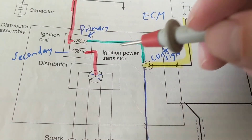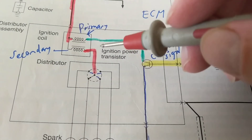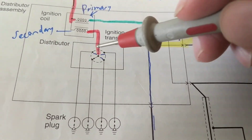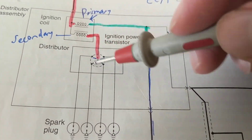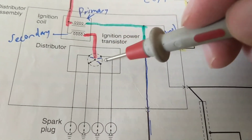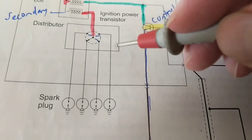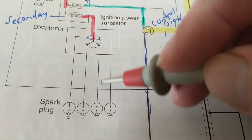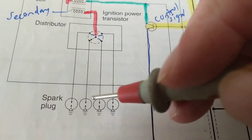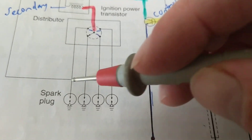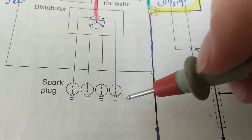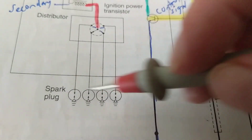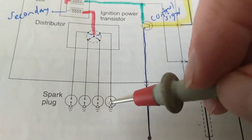When we collapse the magnetic field, like the switch did previously, we're inducing a voltage into the secondary. This component is called the distributor — it turns around to every spark plug. This picture shows a four-cylinder because there are four spark plugs.